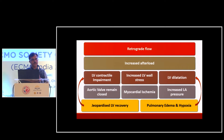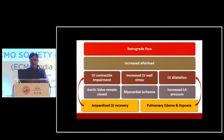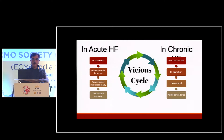In peripheral VA ECMO, retrograde flow from the femoral artery causes a supraphysiological increase in afterload to the left ventricle, leading to further LV dilatation. There is reduction in LV contractile function and increased valve stress. In acute conditions this leads to myocardial ischemia due to subendocardial perfusion reduction. The aortic valve may remain closed, causing further LV dilatation, increased LA pressure due to incompetent mitral valve, and ultimately jeopardized LV recovery or pulmonary edema and hypoxia.